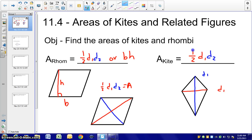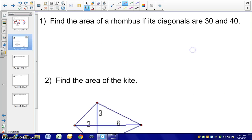So let's try a few examples dealing with a kite and a rhombus. First one, find the area of a rhombus if its diagonals are 30 and 40. Well, again, we know two formulas for this. One of them is one half D1 D2. So we can simply just do one half 30 times 40, which would give us 600 units squared.